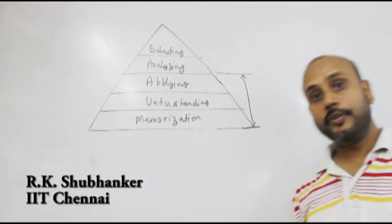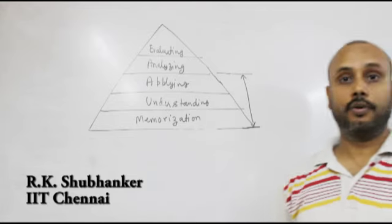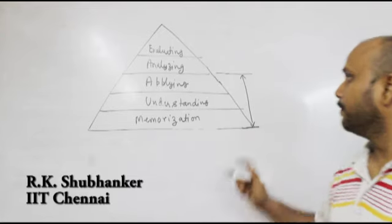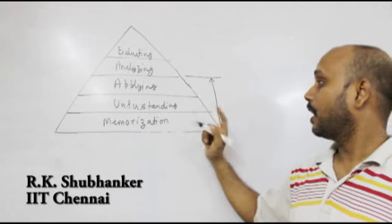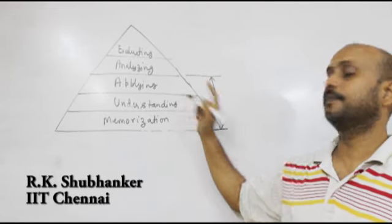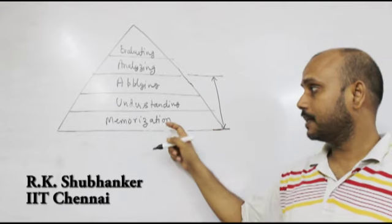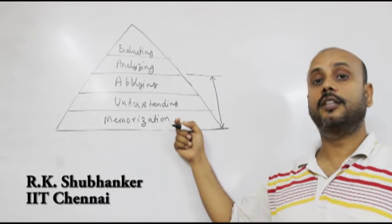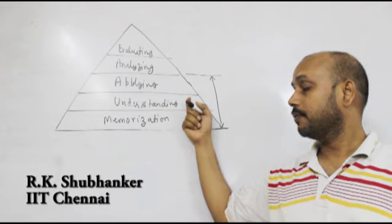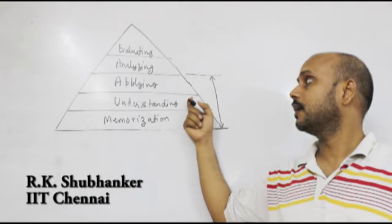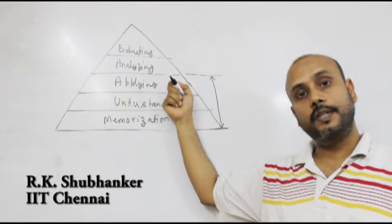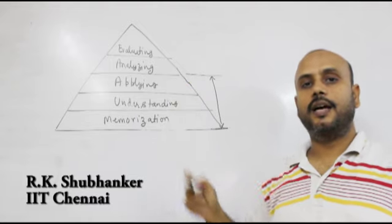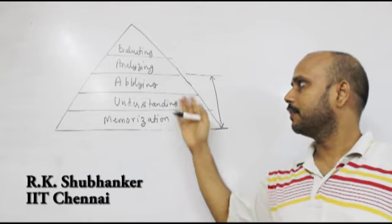We understand that in order to achieve our goal — to understand our diversity well — we must achieve the first three levels of this pyramid. That means we must have all the facts known to us, we must understand the concepts, and we should be in a position to apply those concepts. Now I start describing them one by one.